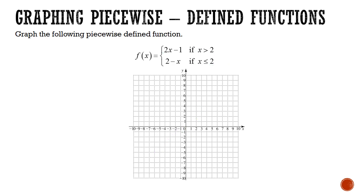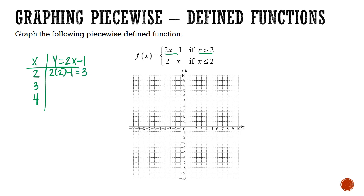Let's try this again. If you want to see if you've learned it, you can pause this video, try to work it out on your own, and then unpause to watch me work through it. We'll do this piece in green: let x and y equal 2x minus 1, for x values that are larger than 2. We'll start at 2 because we need an open circle there, then choose values larger than it, like 3 and 4. Plugging in: 2 times 2 minus 1 is 3. 2 times 3 minus 1 is 5. And 2 times 4 minus 1 is 7.